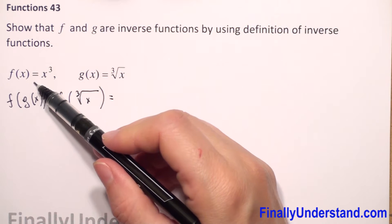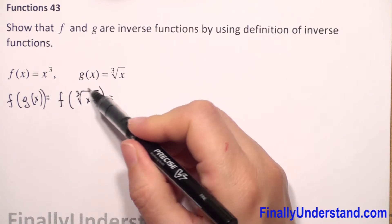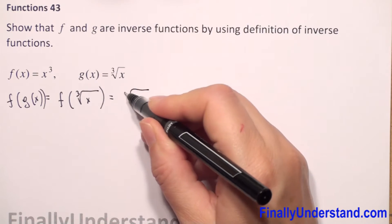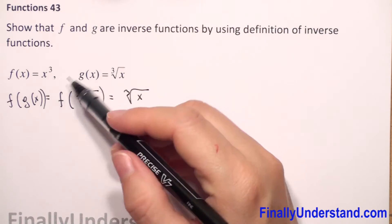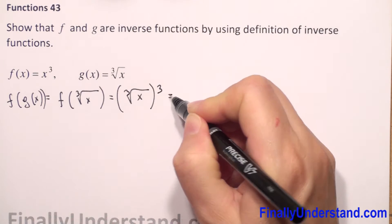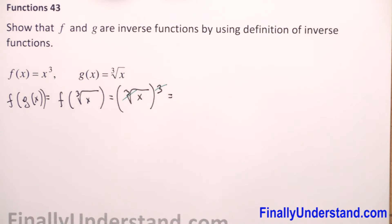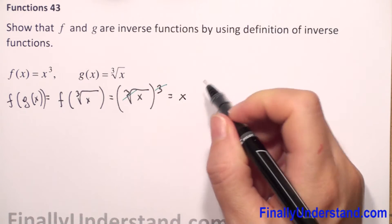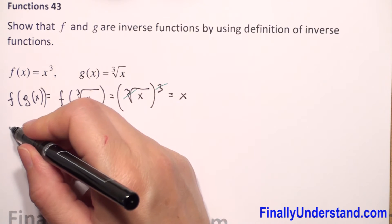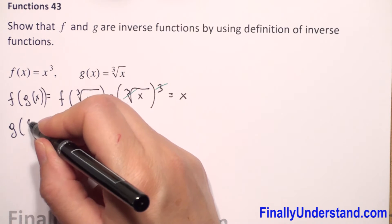We apply the formula of our f function and substitute x with whatever is in the parenthesis — the cube root of x — and raise everything to the third power. The cube root reduces with the exponent of three, so this equals x. We get the identity function.